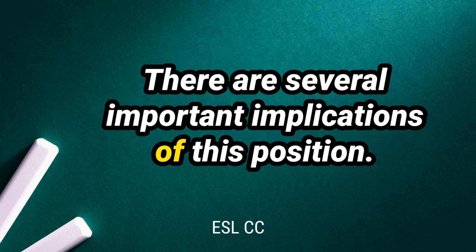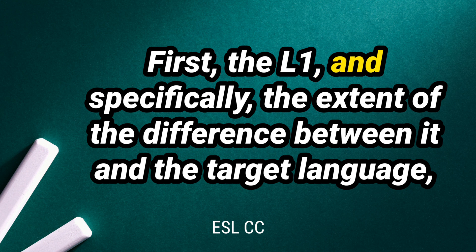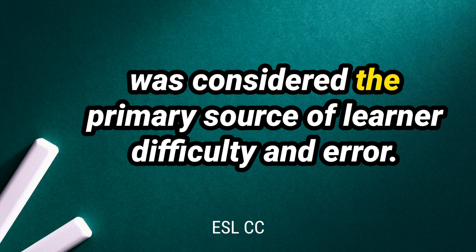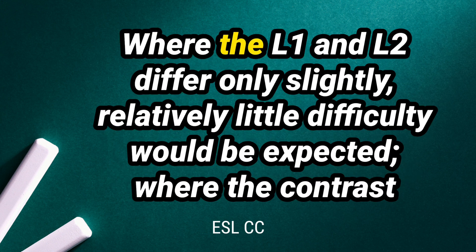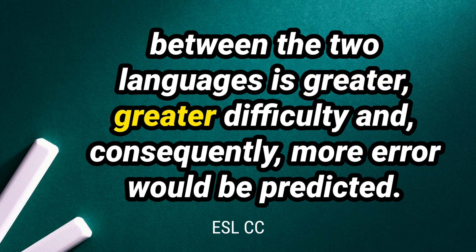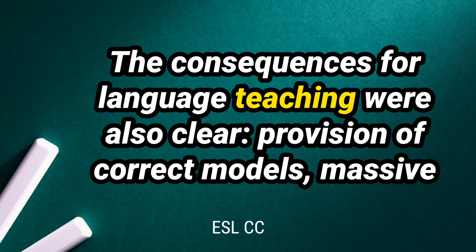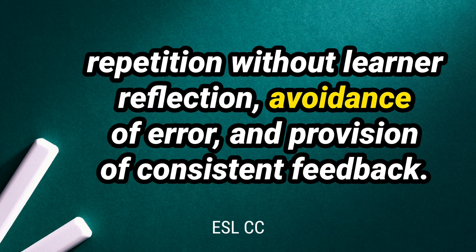There are several important implications of this position. First, the L1 — and specifically the extent of the difference between it and the target language — was considered the primary source of learner difficulty and error. Where the L1 and L2 differ only slightly, relatively little difficulty would be expected. Where the contrast between the two languages is greater, greater difficulty and more error would be predicted. The consequences for language teaching were also clear: provision of correct models, massive repetition without learner reflection, avoidance of error, and provision of consistent feedback.